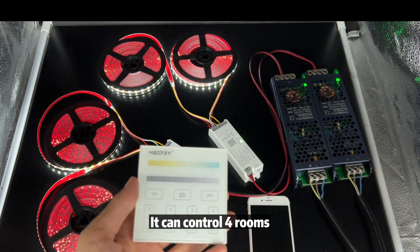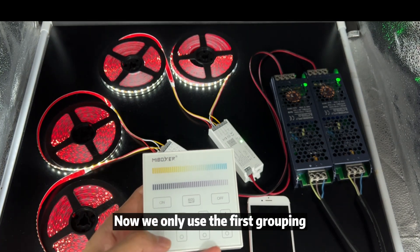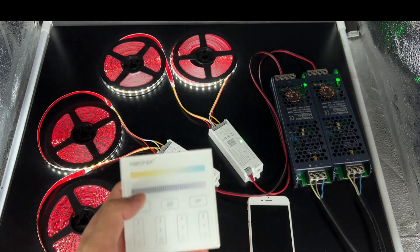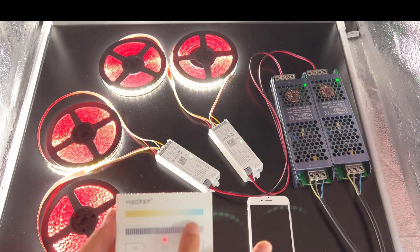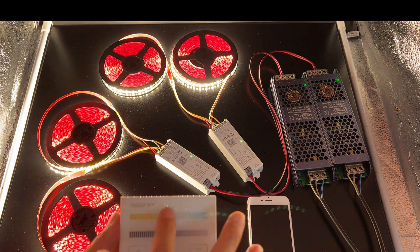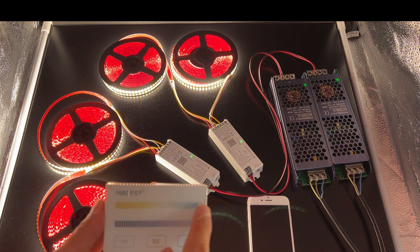It can control the rooms. So it has 4 zones. Now we only use the first grouping. Turn on and turn off. Color temperature change is very flexible.